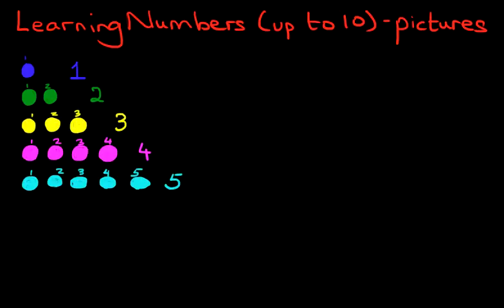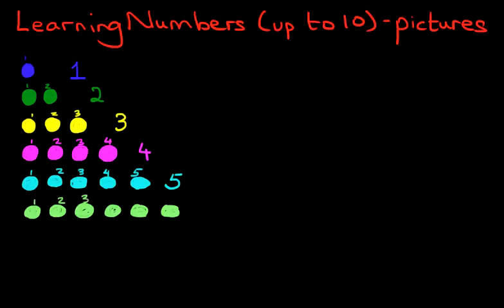Okay, we're going to carry on. This time we've got lime colored balls — or we can say lime or light green. So how many lime colored balls do we have? Well, let's count them. We've got one, two, three, four, five. What comes after five? It is six. There are six lime colored balls.